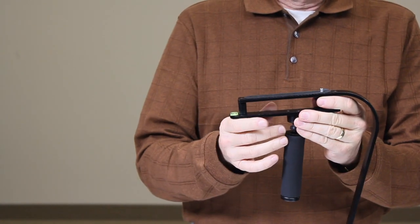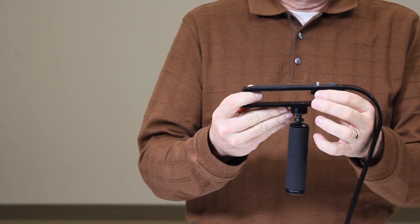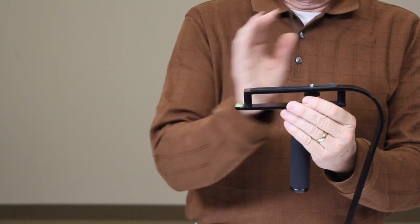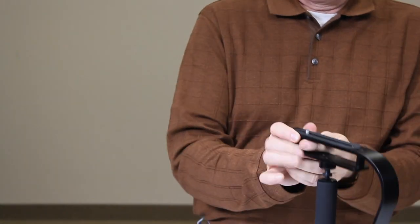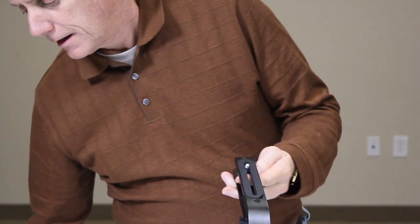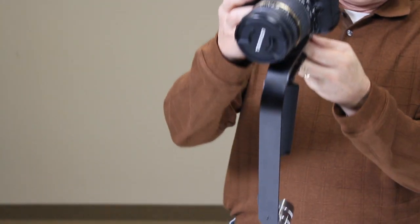This screw will go into the tripod mount of your camera. You'll move it back and forth to adjust the weight front and back on the stabilizer. I'm going to start with the camera all the way at the back.